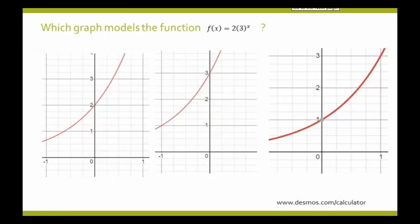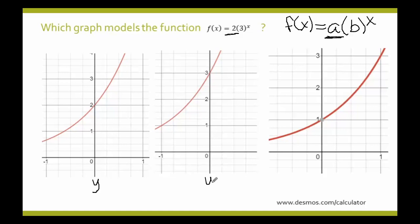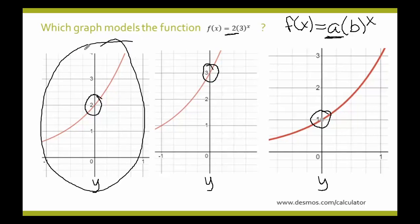Let's look at some graphs and decide which one models the function f of x equals 2 times 3 to the x power. Recalling what we discussed about the y-intercept, the a in front is going to be our 2, which is our y-intercept — where it's crossing the y-axis, the vertical line. We're looking for a graph crossing the y-axis at 2. Here we have one crossing at 2, one at 3, and one at 1. So the first choice is the correct answer.